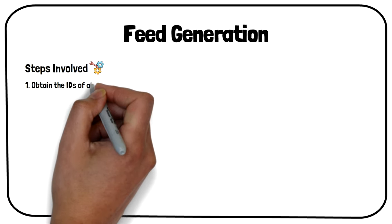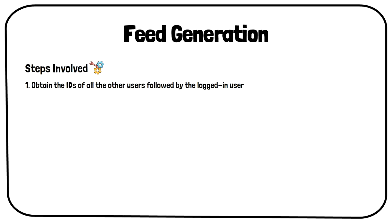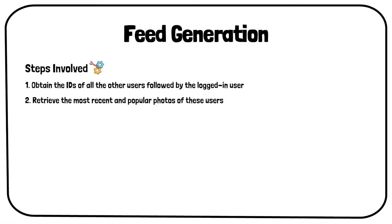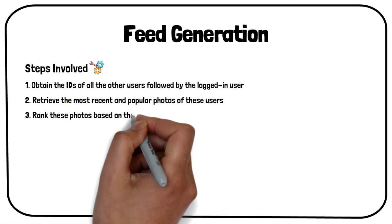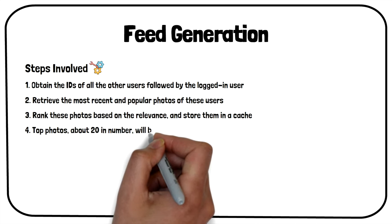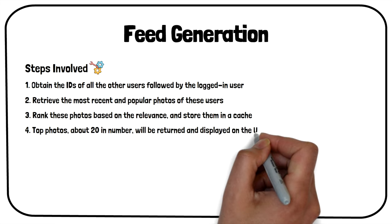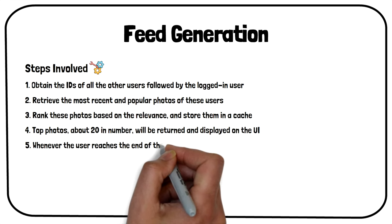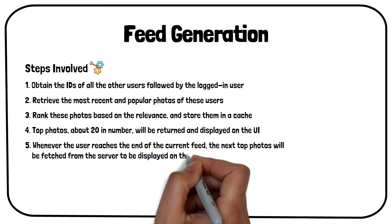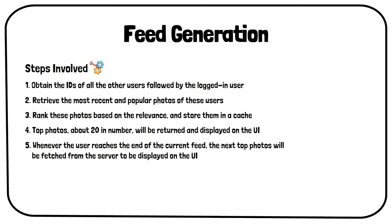In feed generation, we will first obtain the IDs of the other users followed by the logged-in user. Then, we will retrieve the most recent and popular photos for these users. We will rank these photos based on relevance and store them in a cache. The top photos, about 20 in number, will be returned and displayed on the UI. Whenever the user reaches the end of the current feed, the next top photos will be fetched from the server and displayed on the UI. This is a very high-level description of feed generation, as we have generated the feed only once and stored it in the cache.